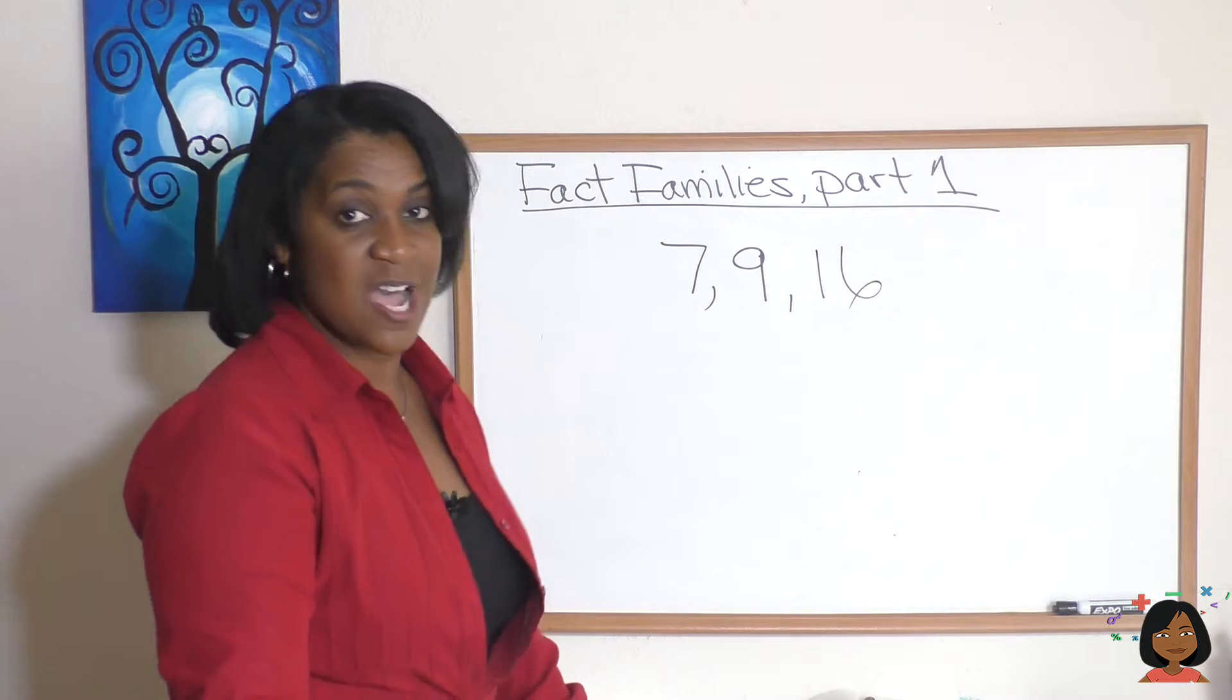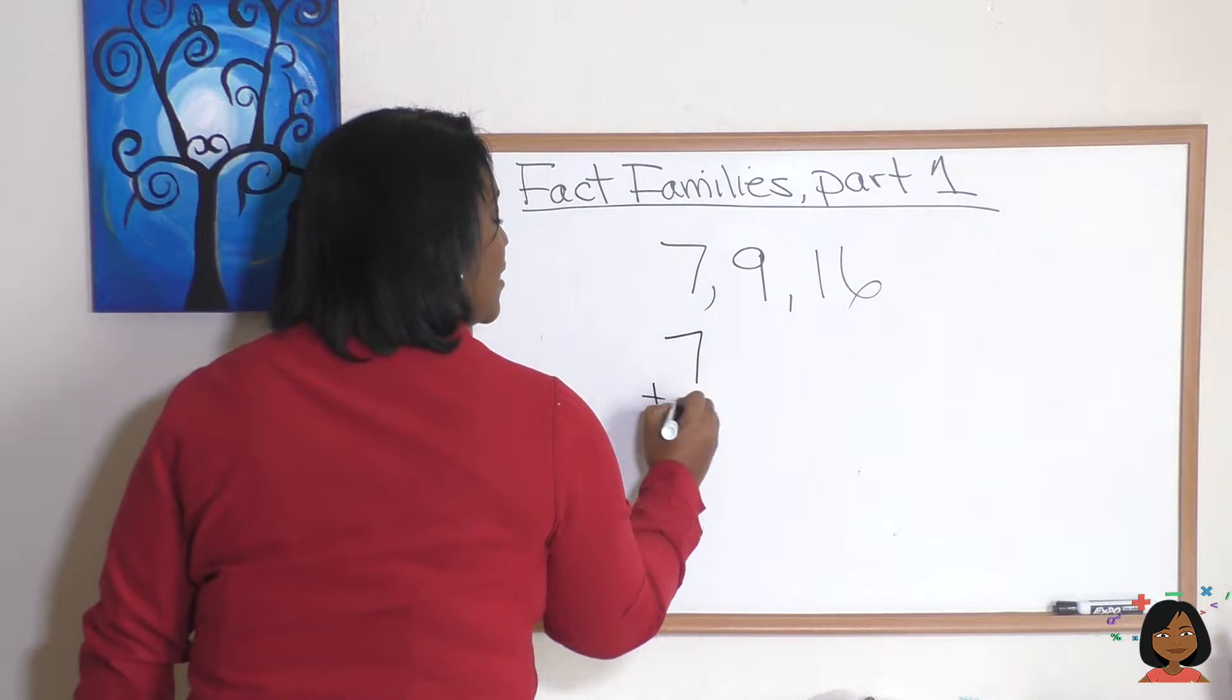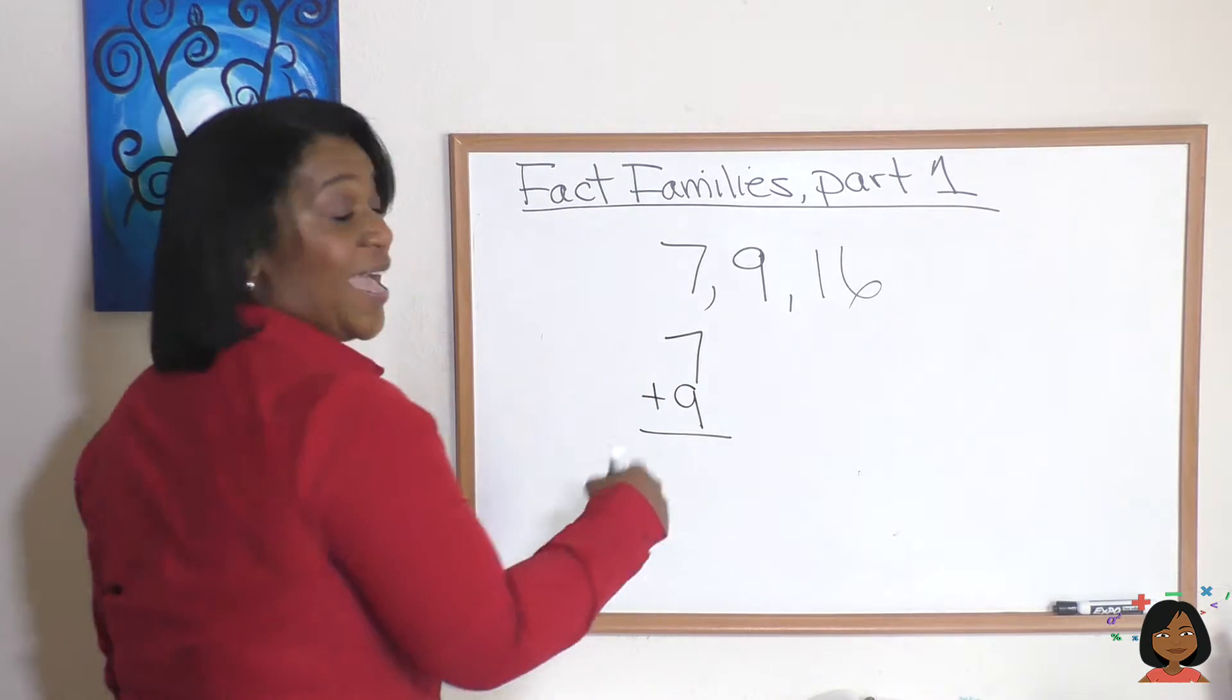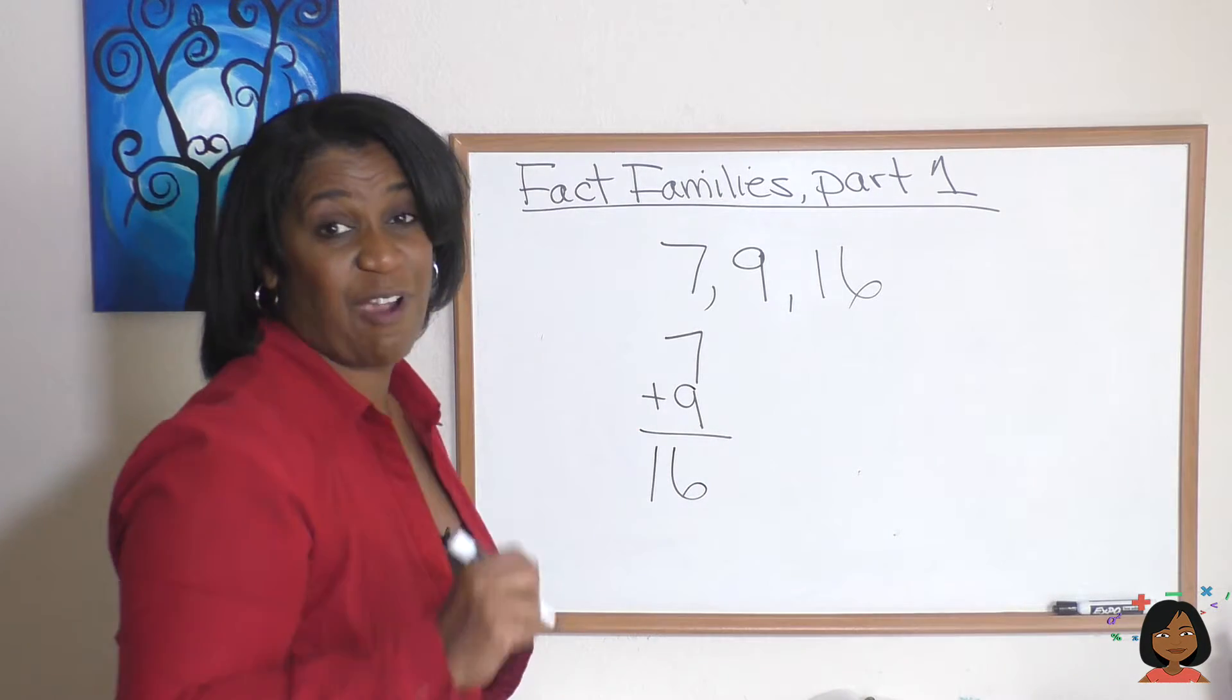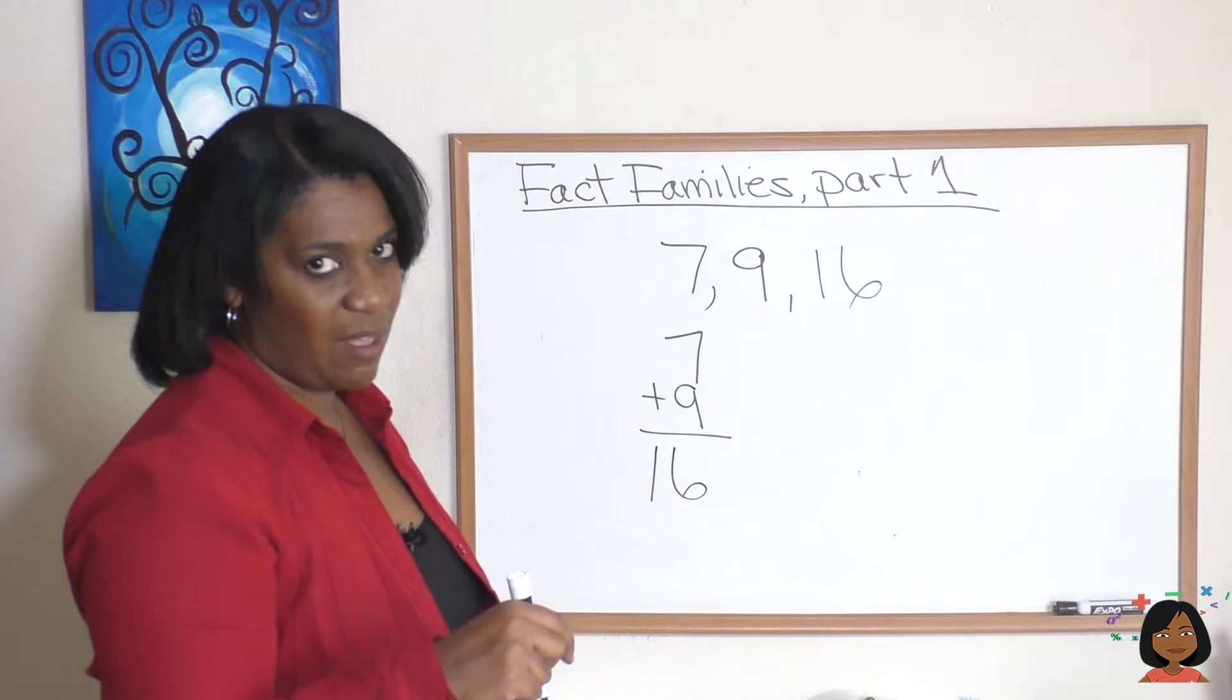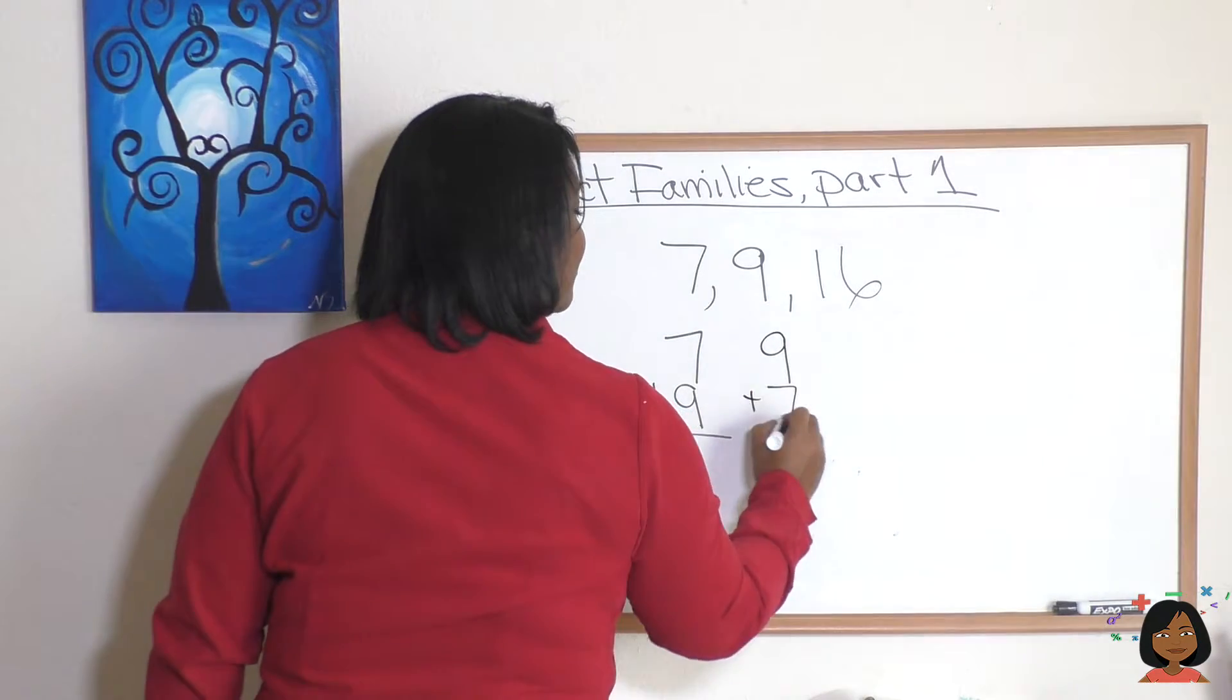Here we go. So we can add 7 and 9 and we add 7 and 9 we get 16. But because of the commutative property of addition we also can add 9 plus 7 and still get 16.